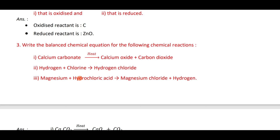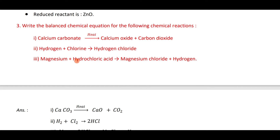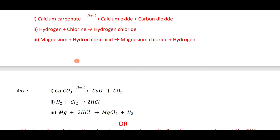Write the balanced chemical equations: calcium carbonate on heating gives CaO plus CO₂. Hydrogen plus chlorine gives 2HCl: H₂ plus Cl₂ gives 2HCl. Magnesium plus hydrochloric acid gives magnesium chloride plus hydrogen: Mg plus 2HCl gives MgCl₂ plus H₂.